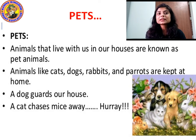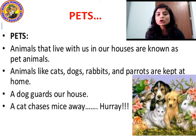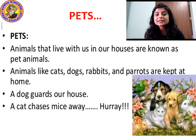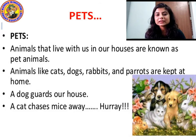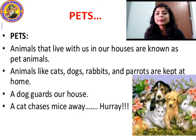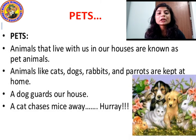Animals like cats, dogs, rabbits, and parrots are kept at home. These animals can be kept at home and they can be tamed. Tamed means they can be trained — we can give them training so that they learn to live with us, so that they don't behave like wild animals. We tame animals so that they can live with people and will not harm us even if they stay with us at home.